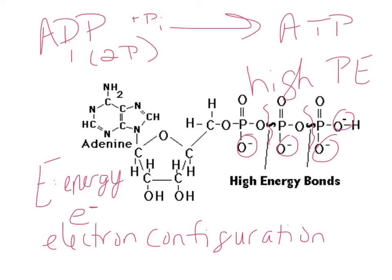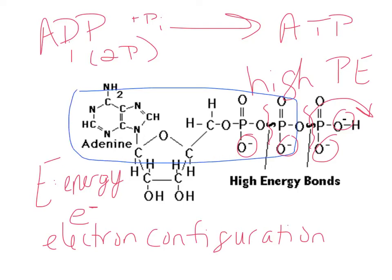This third phosphate is readily broken off. When you break that third phosphate, the molecule goes back to being ADP, and you've lost two of those negative charges, so it's significantly more stable than ATP.